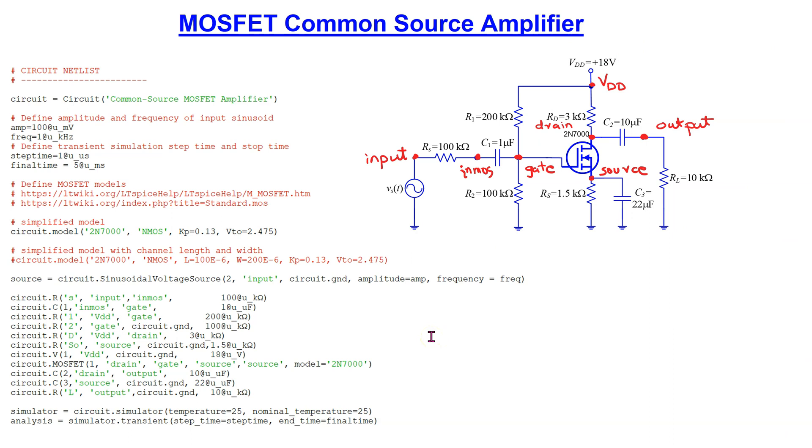This is the same common source amplifier circuit modeled in PySpice. Using descriptive node labeling, we can translate the circuit diagram into a circuit netlist as shown here. We define the 2N7000 NMOS Level 1 model as shown here. It is also possible to define the length and width using the syntax shown here.